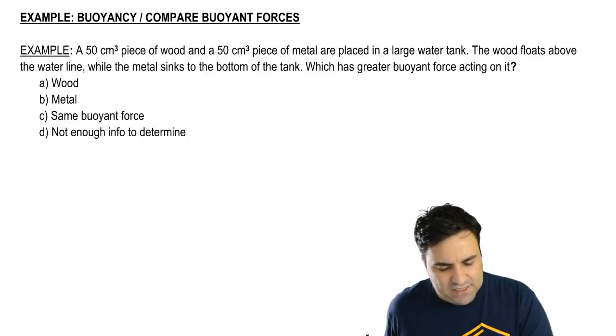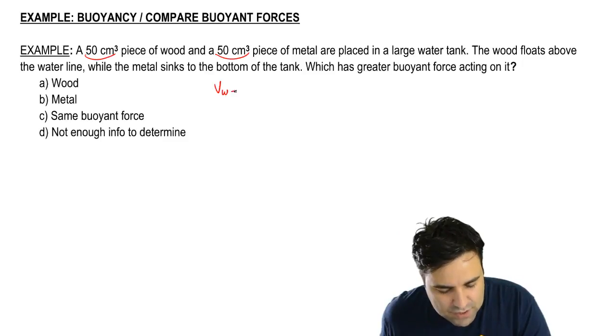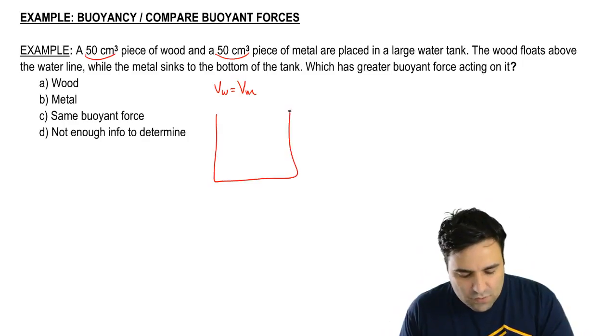Here we have a piece of wood and a piece of metal and they both have the same volume. Volume wood equals volume metal. They're both placed in a large water tank. The wood is going to float.